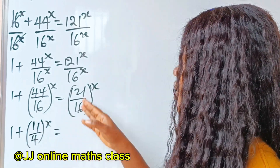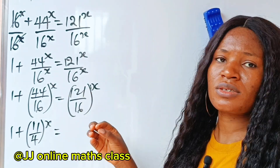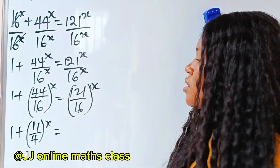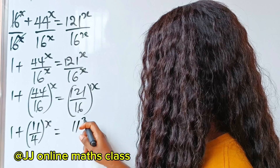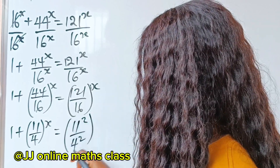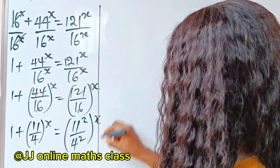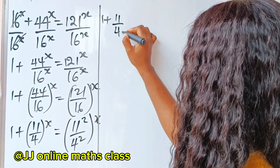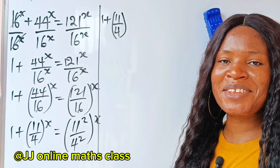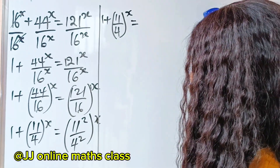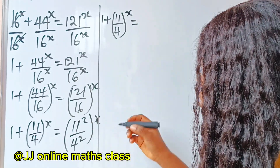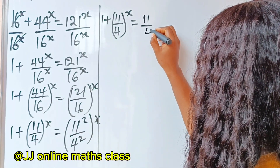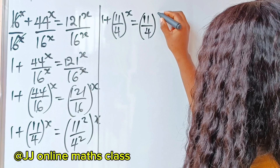Is equal to... Now when you look at this, what I see is just squares, because 1 to 1 is 11 squared, and 16 is 4 squared. So I am going to write that 11 squared over 4 squared, everything to the power of x. Alright, now we have 1 plus 11 divided by 4 to the power of x, is equal to 11 squared over 4 squared, raised to the power of x.